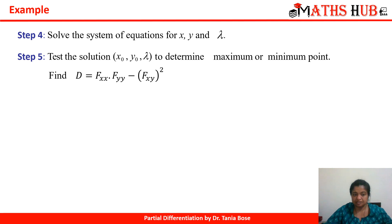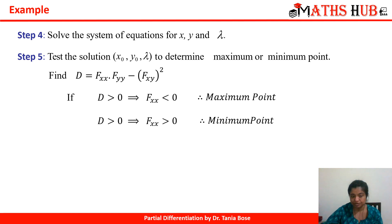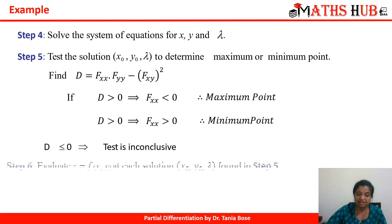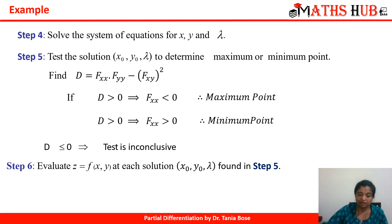Step 5: test the solution for maximum or minimum by checking D = f_xx · f_yy − (f_xy)². If D ≥ 0 and f_xx < 0, it is a maximum point. If D > 0 and f_xx > 0, it is a minimum. If D < 0, the test is inconclusive. Then evaluate z for each solution (x₀, y₀, λ) found in the previous step.